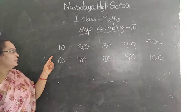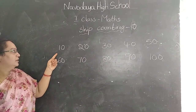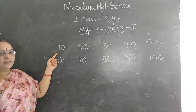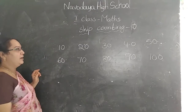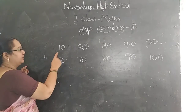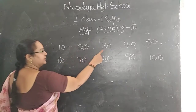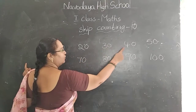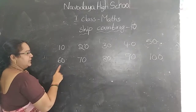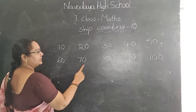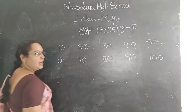Children, look at the board. Skip counting of 10 means we have to count only 10. I am telling you: 10, 20, 30, 40, 50, 60, 70, 80, 90, 100.